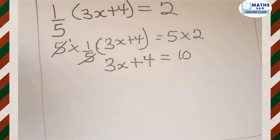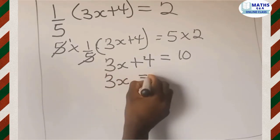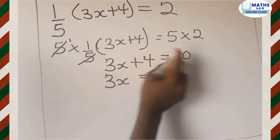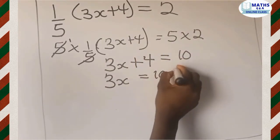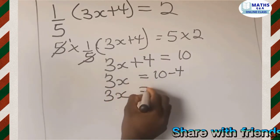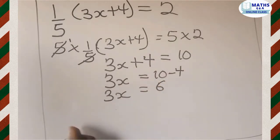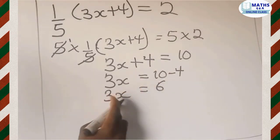Now you group like terms. So we have 3x equal to, we have 10 here already and we are sending the 4 to this side. It's positive, so when it comes here we take it as negative. So we have 3x equal to 10 minus 4 gives 6.